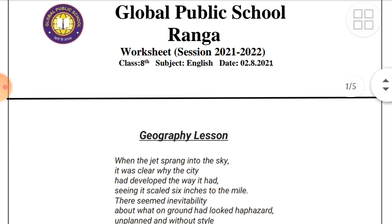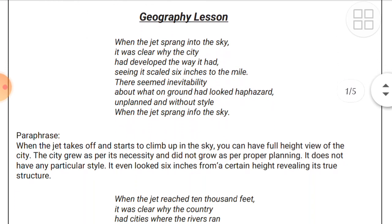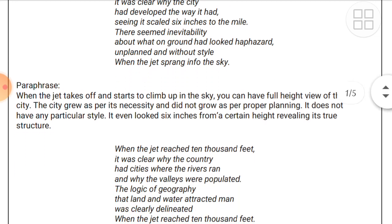Now without wasting any time, let's get started. This is taken from Bravia — Geography Lesson. Let's look at the first stanza. I will also give you the explanation. Here is the text: 'It scaled six inches to the mile, there seemed inevitably about what on ground had looked haphazard, unplanned and without style, when the jet sprang into the sky.' Let's read the explanation of this stanza.